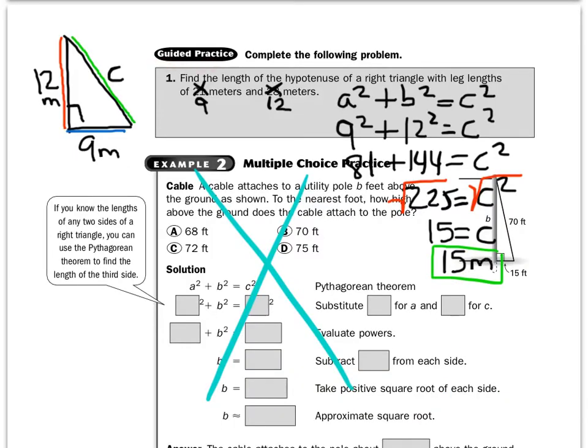Let's practice this. Look at guided practice number one. Find the length of the hypotenuse of a right triangle with legs, and I want you to cross out their number and put 9 meters. Cross out the other one and put 12 meters. Let's draw it right here, right triangle, draw it in the margin, put that right angle symbol, and we're going to make this side 12 meters. We're going to make the bottom 9 meters, and C is missing. The hypotenuse is missing.